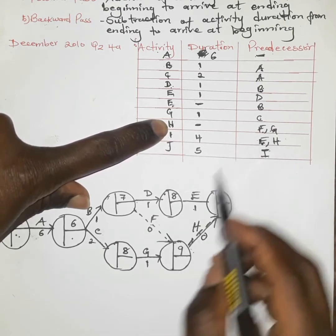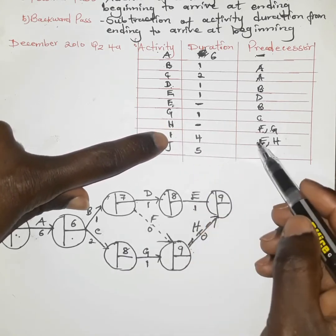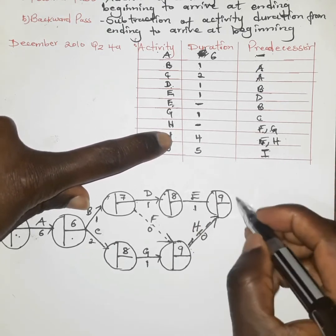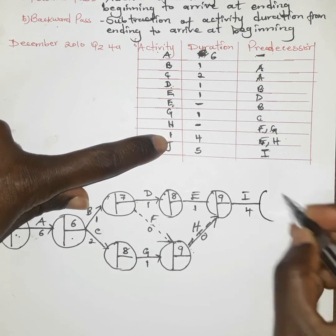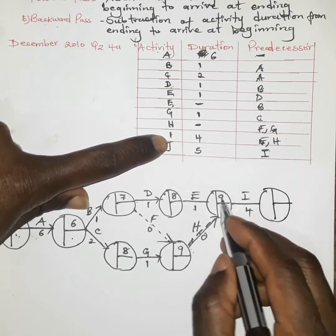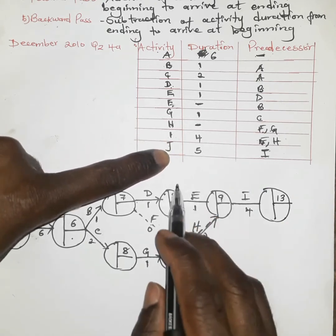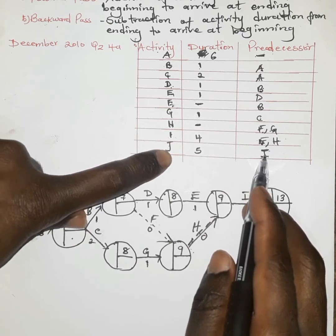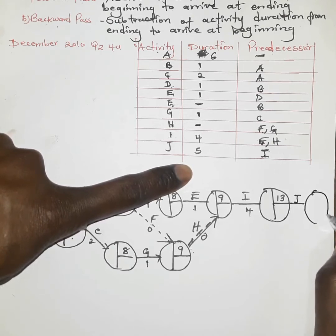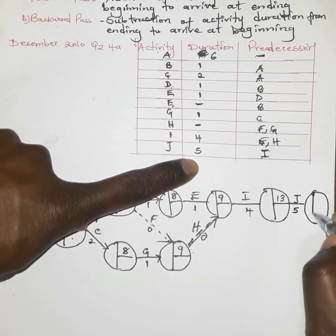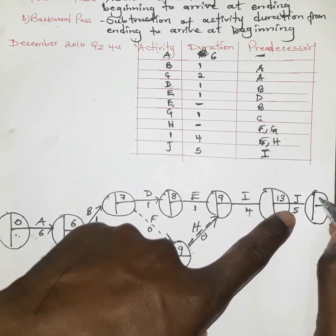Now we have E and H converging. The moment E and H are completed, we have activity I, which takes a duration of four weeks. The duration taken by the last activity plus I gives us thirteen. The last activity, which depends entirely on I, is J. Activity J begins as soon as I ends and J takes five weeks, meaning the whole project duration will take thirteen plus five, which is eighteen.